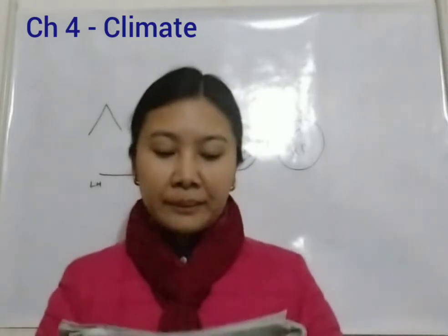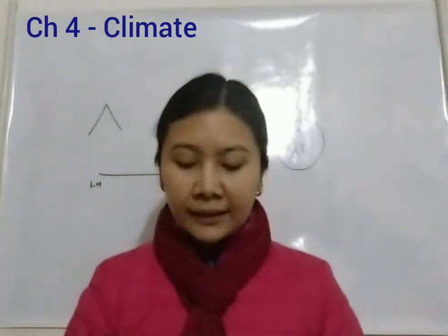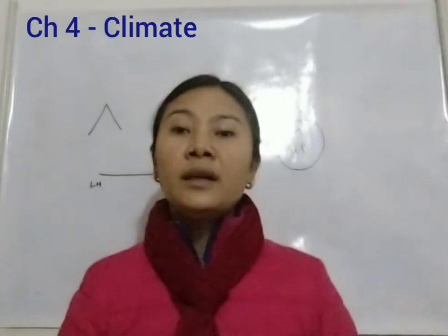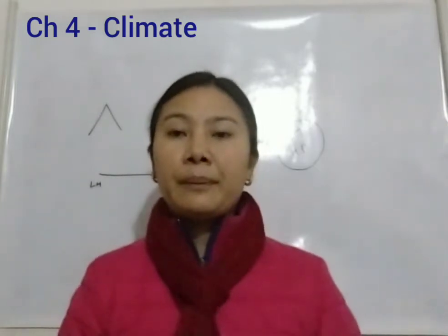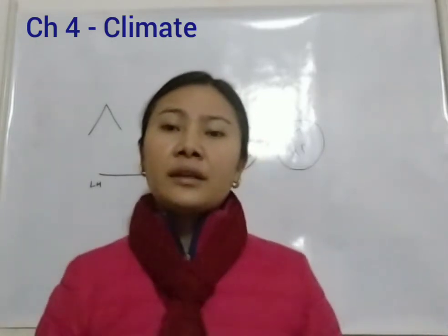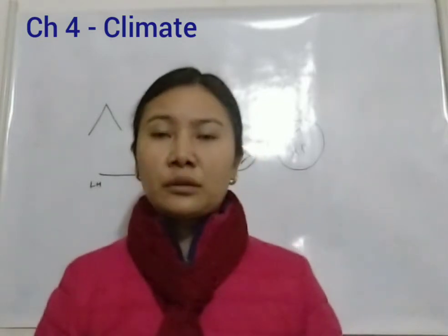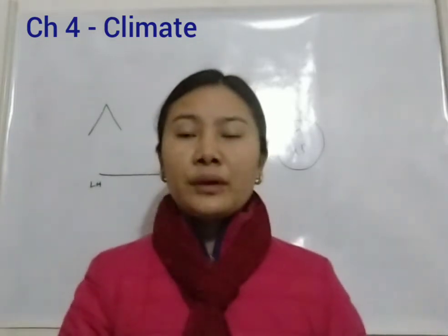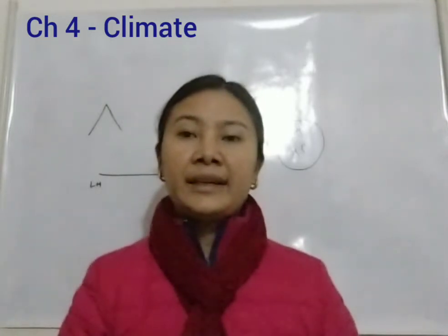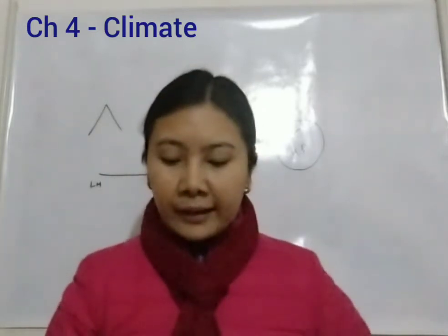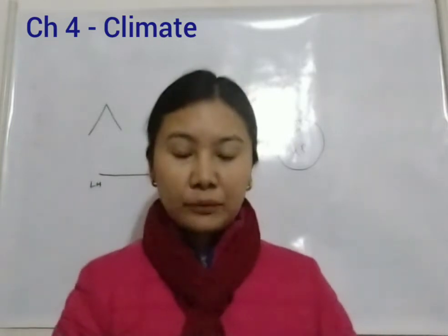The third control is pressure and wind system. The fourth is distance from the sea. The distance from the sea is an important factor — if an area is near the sea, it has a moderate kind of climate. If an area is far from the sea, there is extreme climate — greater temperature fluctuations. This is called continentality.